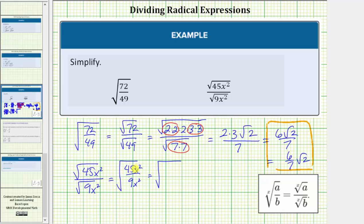notice how 45x² is equal to five times 9x². We still have divided by 9x². And 9x² divided by 9x² simplifies to one. And therefore, this simplifies nicely to the square root of five.